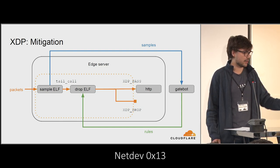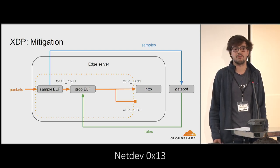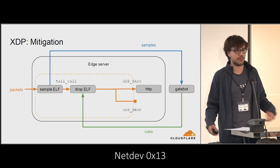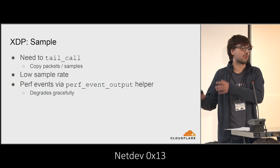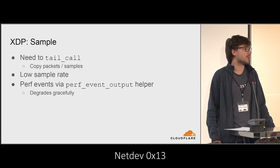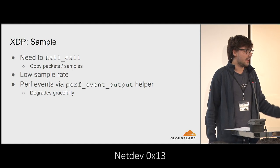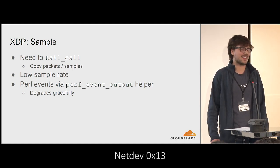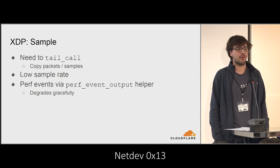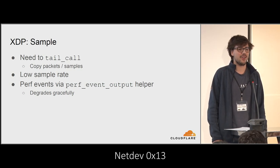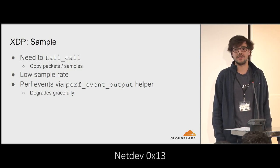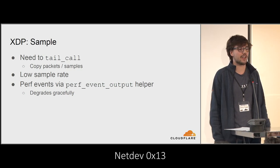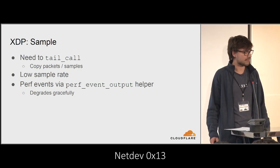We could have a sampler eBPF program that samples packets, sends them off to GateBot, then tail calls into a dropping eBPF program that either passes or drops the packet. Thankfully, we need a really low sample rate — attacks tend to be really big, so even tiny sample rates serve us well. There is a kernel BPF helper called perf_event_output, which lets you put whatever you want — including the whole packet — into a perf event. It ends up in a perf ring buffer readable from user space. This also degrades gracefully: perf is meant to be lossy, so if we get a huge attack and our sample rate is set too high, extra samples are just dropped, which works great for sampling.